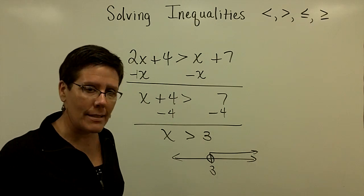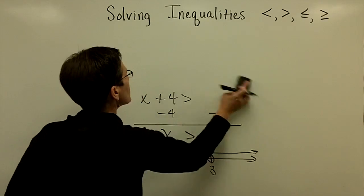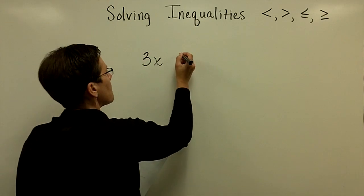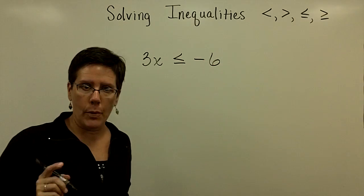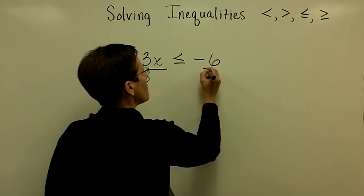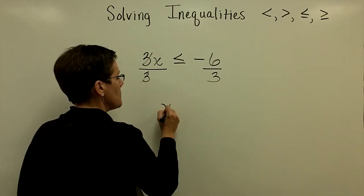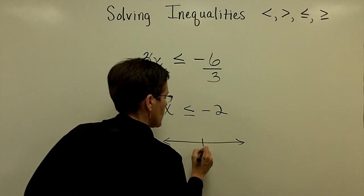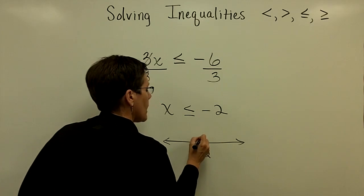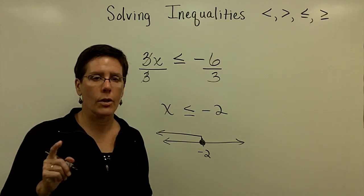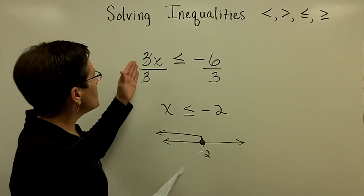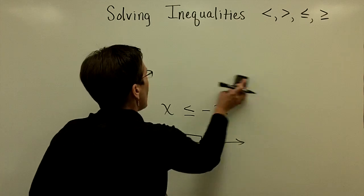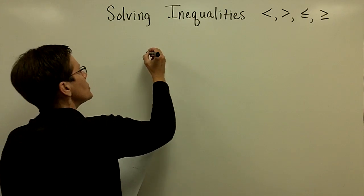Not just a single solution, but a set of numbers where x is greater than 3. Now let's use the multiplication principle. So let's take 3x is less than or equal to negative 6, and divide both sides by 3 to get x alone. This becomes 1x, and I discover that x is less than or equal to negative 2. On my number line, I'll stick a negative 2 on here, color in the circle, and x has values less than or equal to that negative 2. So dividing both sides by a positive 3 gives me x is less than or equal to negative 2.